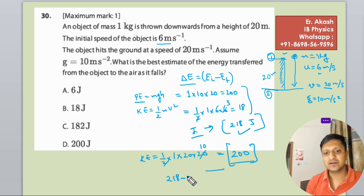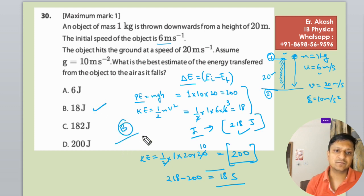So 218 minus 200 equals 18 joules. 18 joules is the answer. B option will be the right option.